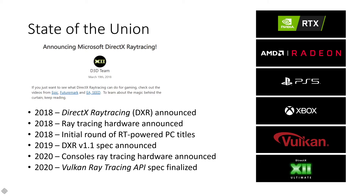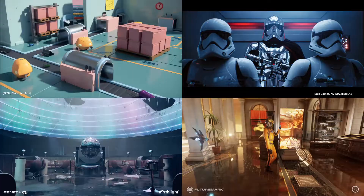Then in 2019, people had more time to play with the API, and it evolved through conversations between Microsoft, the various companies, and developers, which led to the DirectX ray tracing spec evolving to version 1.1. Following that in 2020, a new generation of consoles got announced with ray tracing support, which really helped solidify and reinforce the fact that real-time ray tracing is happening across consumer entertainment platforms. Also in 2020, the Vulkan API ray tracing spec got finalized by the committee.